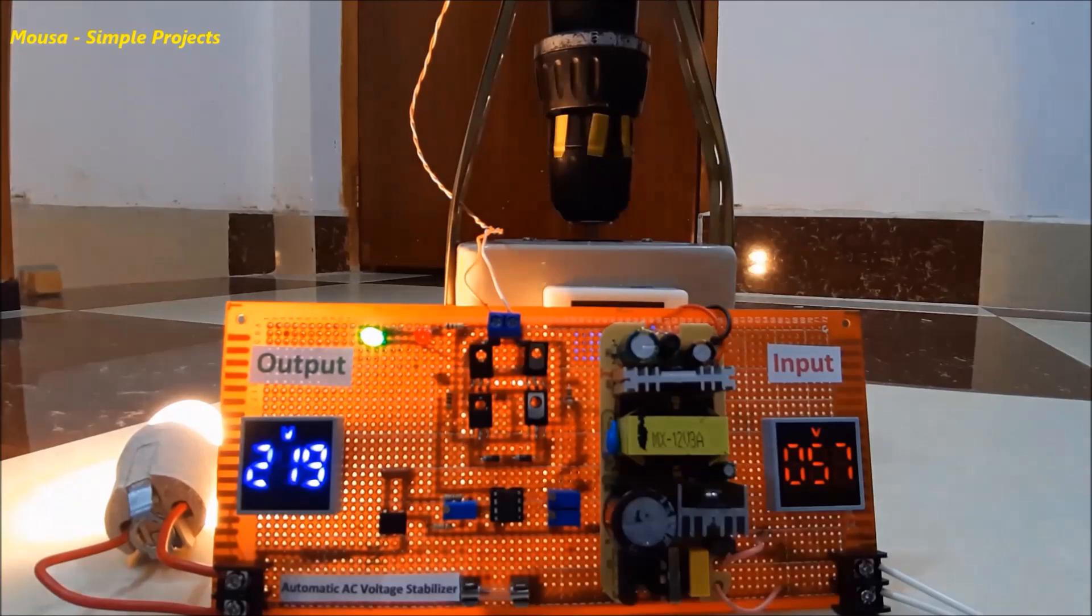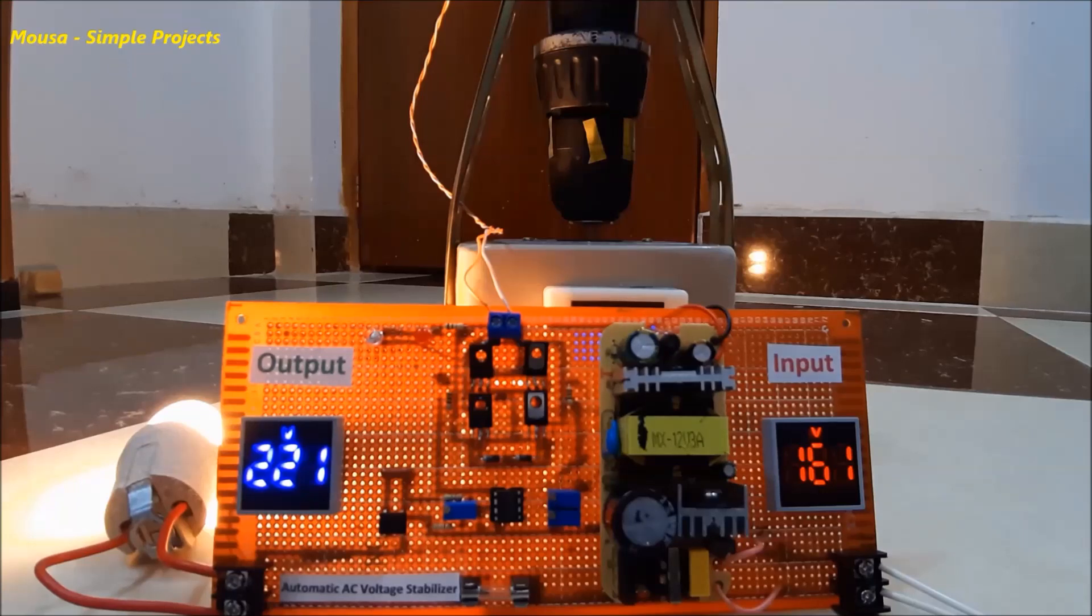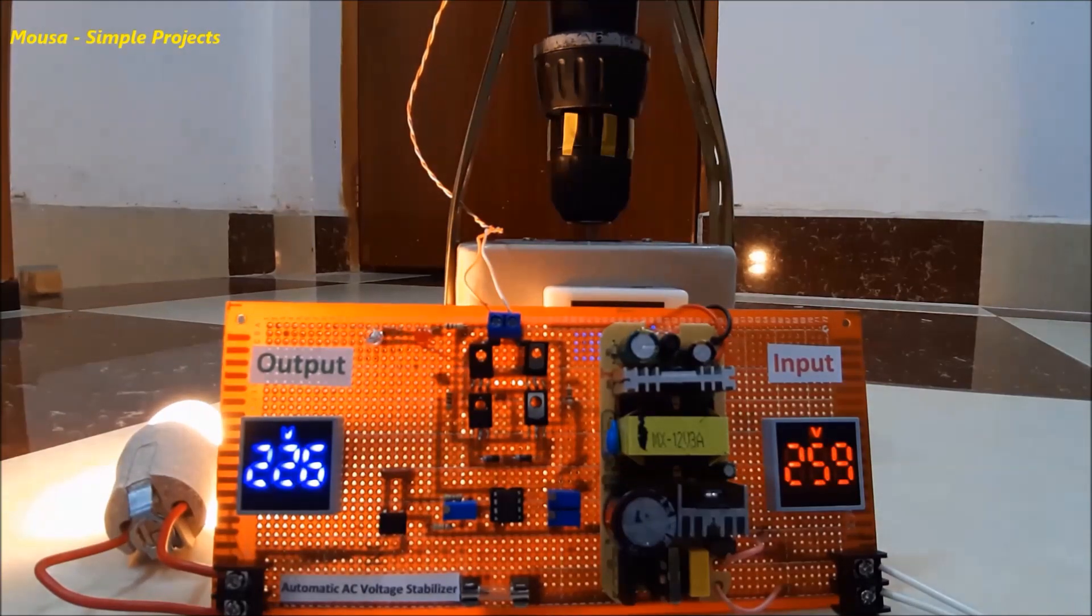In this video I want to show you how to make an AC voltage stabilizer without any microcontroller. This device can convert any high or low AC voltages at the input to stable 220 volts at the output.